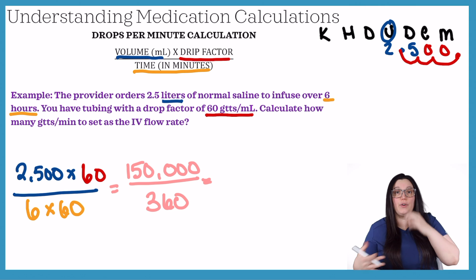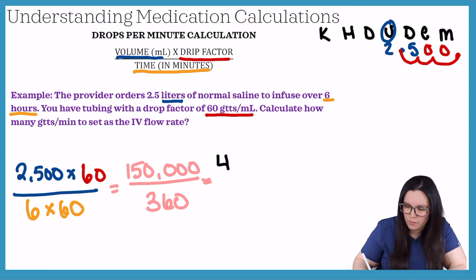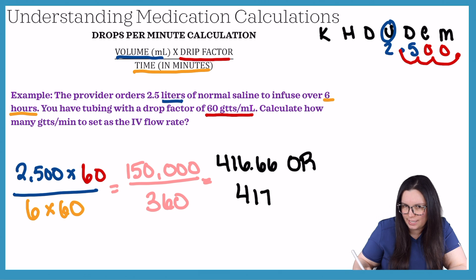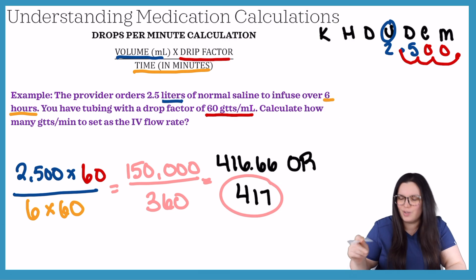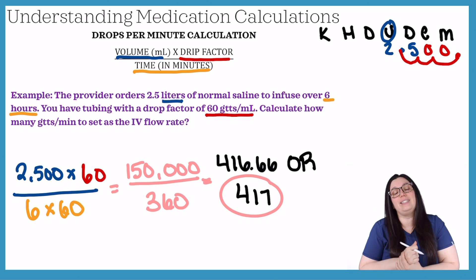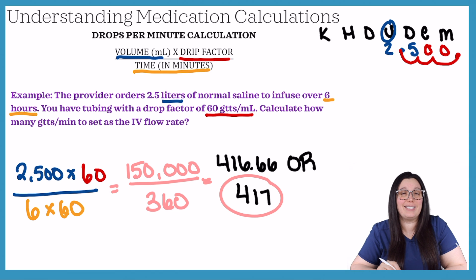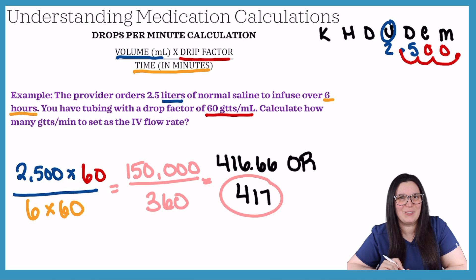Further dividing, we get 416.66, or 417 drops as we round up. The correct answer for our final question is 417 or 416.66, depending on what your dosage calculation exam is asking.